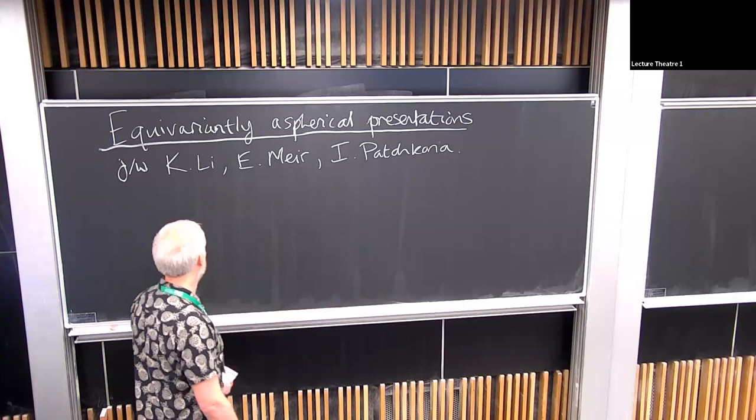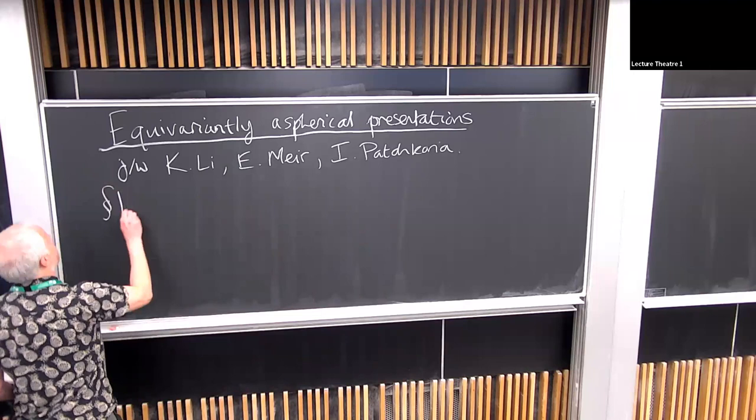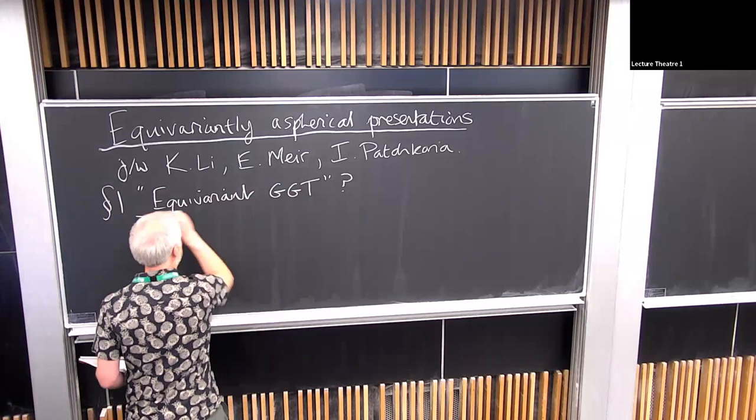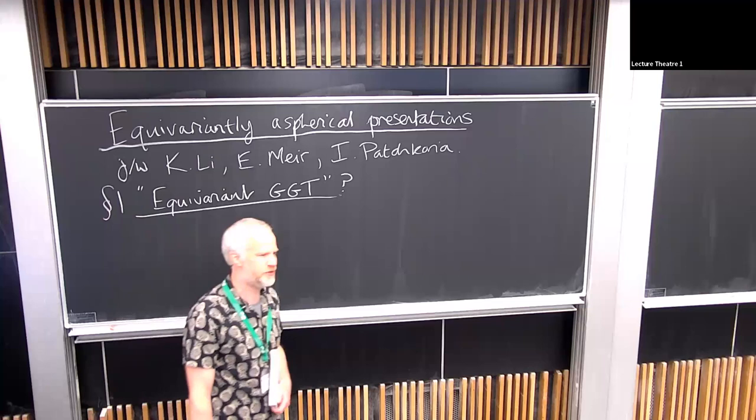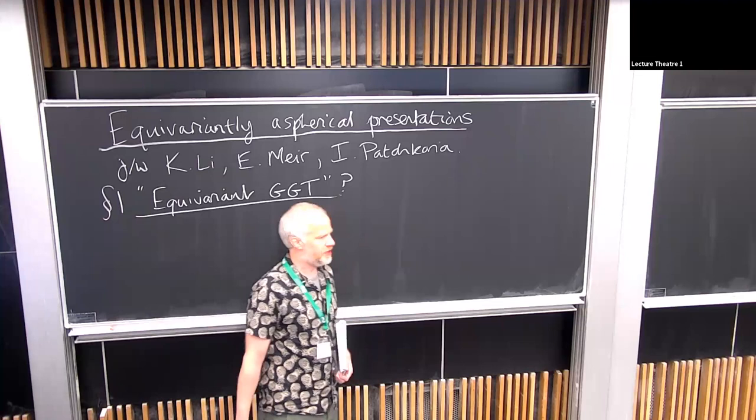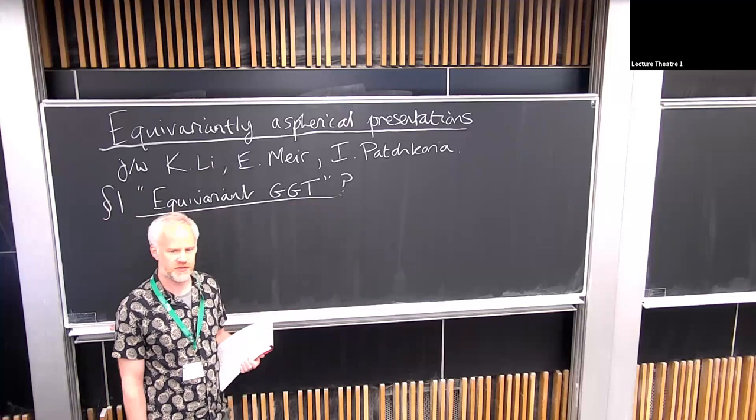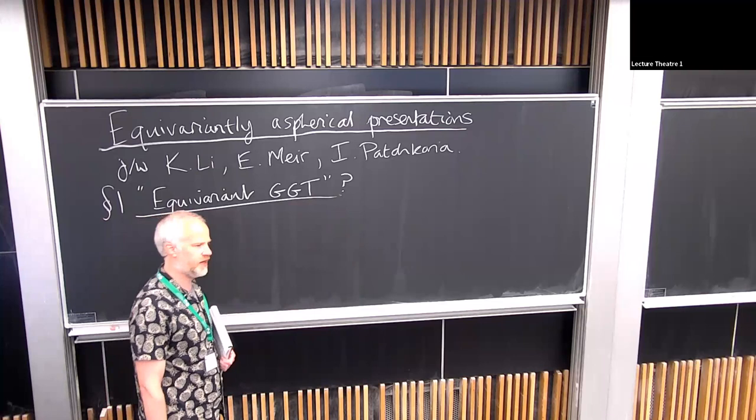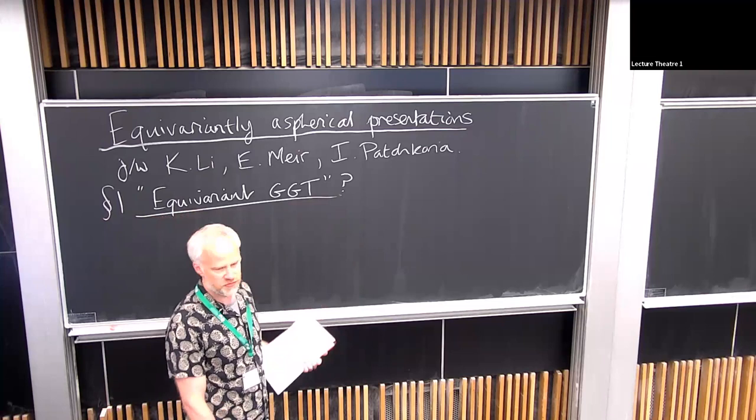Sometimes this means just putting G in front of everything, but other times it means more. A case in point is equivariant stable homotopy theory, the famous celebrated solution of the Kervaire invariant one problem by Hill Hopkins and Ravenel, where we learned things about the non-equivariant setting by understanding very well the equivariant setting. Here's a potentially not so good example, but I'd like to explore anyway. Section one: is there such a thing as equivariant geometric group theory?